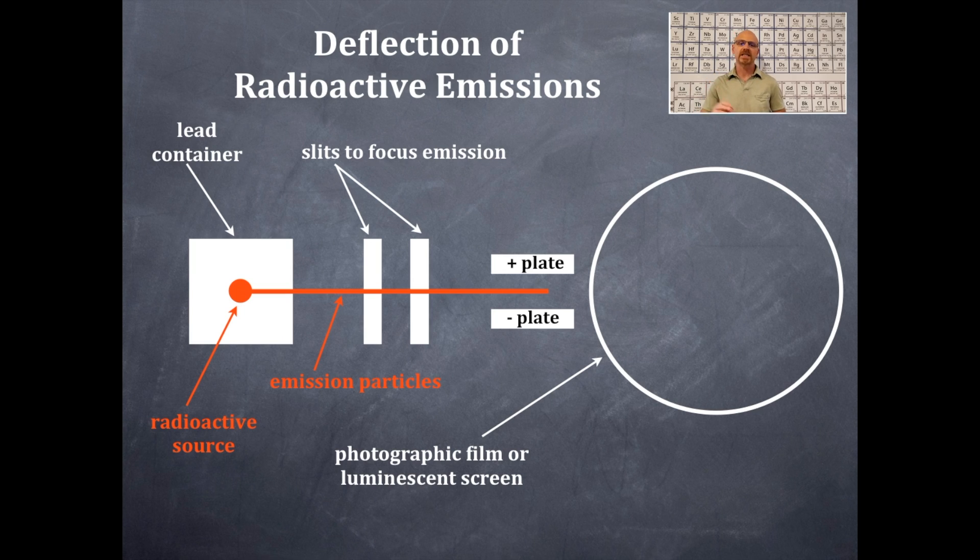So we have three different particles: alpha, beta, and gamma. And we're going to have our radioactive source right there in the middle, and then they will be emitted. They'll be emitted in a linear path to begin with. And if they are either charged or no charge, then we're going to see a deflection based on their charge and their mass.